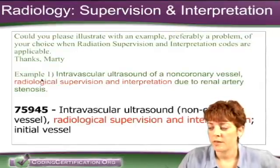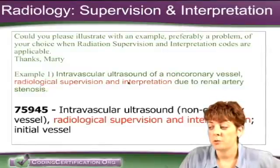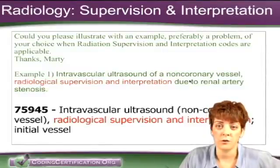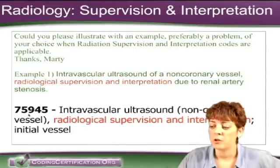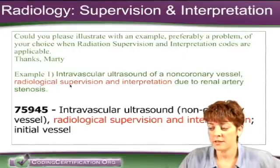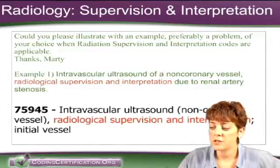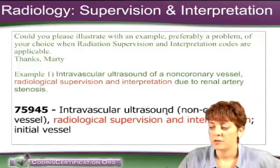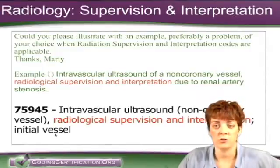Here's an example that Alicia found: intravascular ultrasound of non-coronary vessel, radiological supervision and interpretation, due to renal artery stenosis. This came out of one of our workbook exercises. When you look up the code in the index, it points you to 75945. When you read the description of that in CPT: intravascular ultrasound, non-coronary vessel, radiological supervision and interpretation, initial vessel.